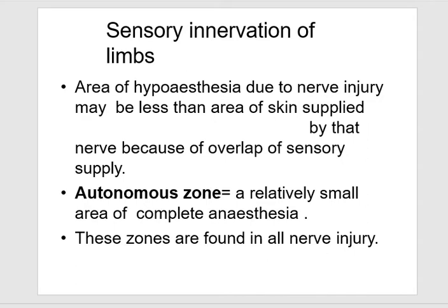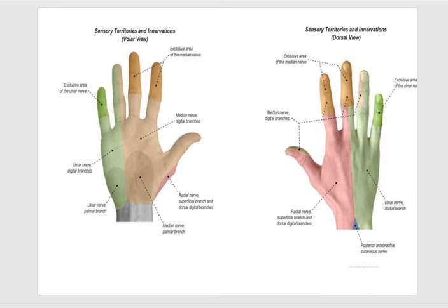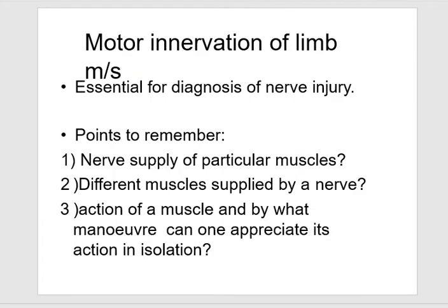The area of hypoesthesia due to nerve injury may be less than the area of skin supplied by that nerve because of overlap of sensory supply. The autonomous zone is a relatively small area of complete anesthesia, and these zones are found in all nerve injuries. These are the sensory territories and innervations — on the left the volar margin, and on the right the dorsal view.